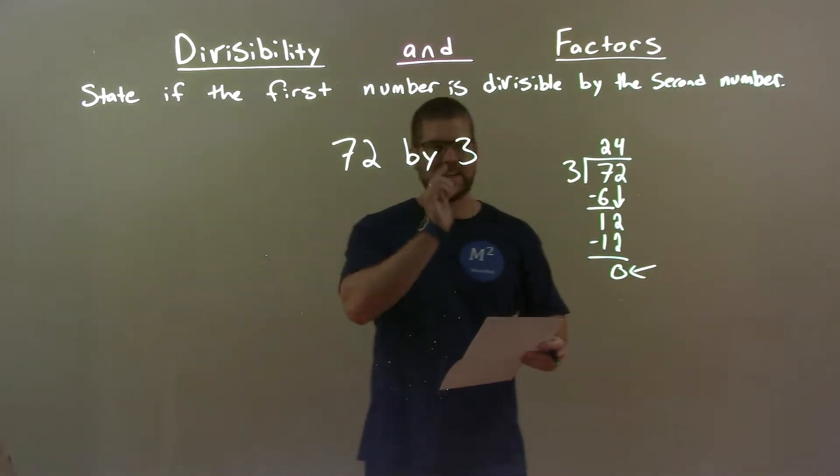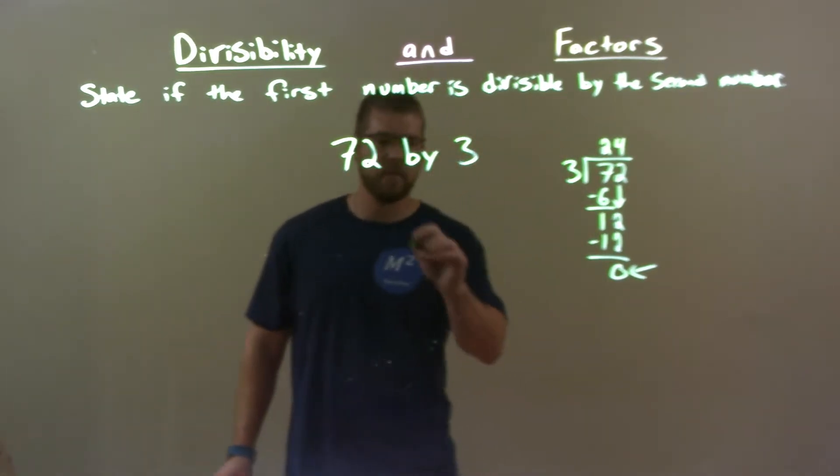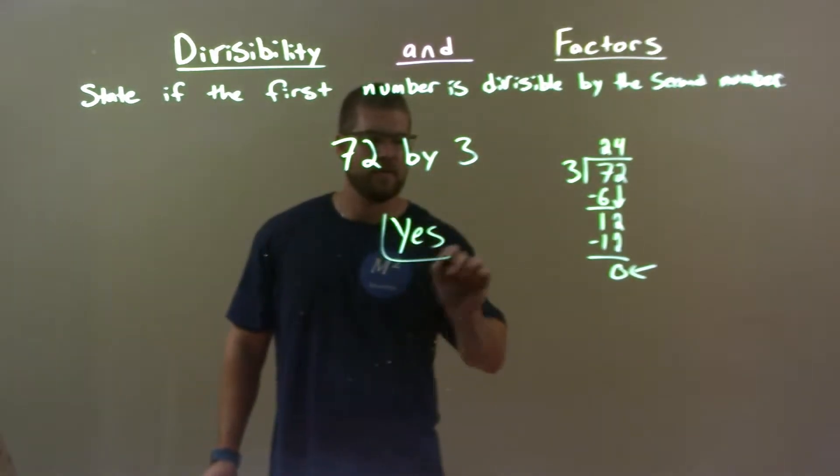Subtract and we end with a remainder of 0. Because we have a remainder of 0, we know 3 goes into 72 evenly 24 times. So our answer here is yes.